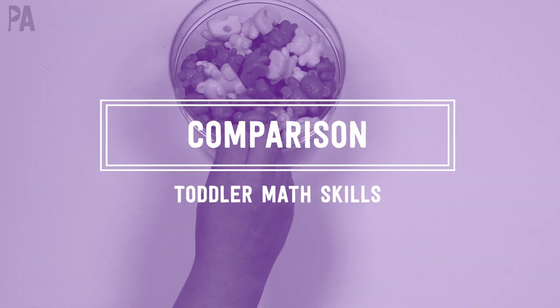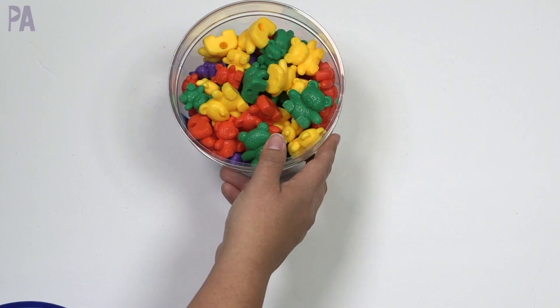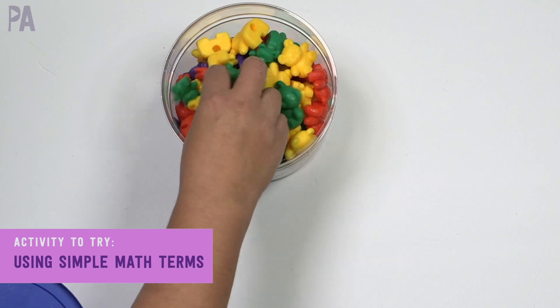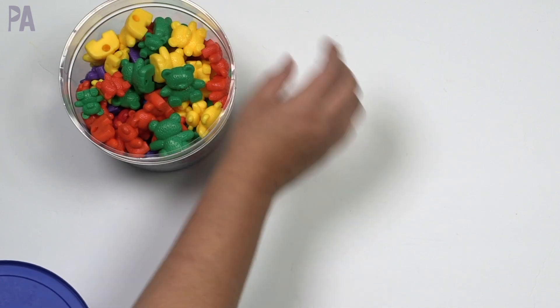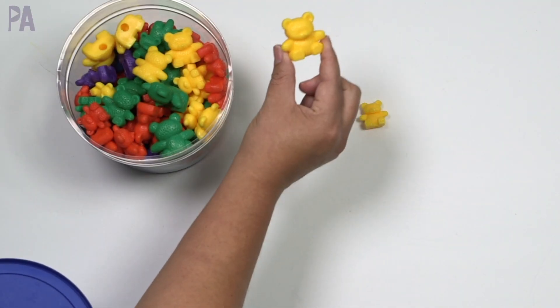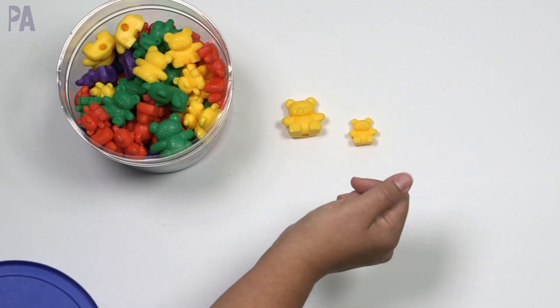This brings me to the next early math skill, which is comparison. So using terms like less, lighter, heavier, bigger, smaller, the counting bears are great for those because you can really see the difference. This is a yellow bear and this is a yellow bear, but they are different because this one is bigger. This one is smaller. Which one is smaller? Which one is bigger?